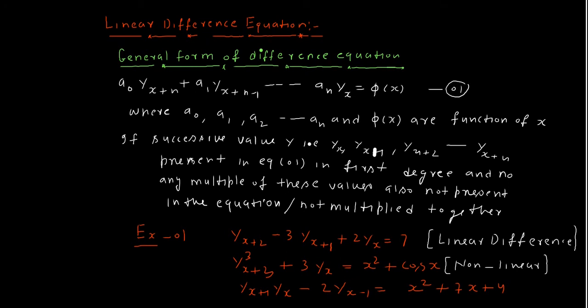In the third equation, each term has degree 1 — y(x), y(x+1), y(x-1) all have degree 1, so the first criterion is satisfied. However, there is a multiple of two terms: y(x) and y(x+1) are multiplied together as two successive differences in the equation. Therefore, this one is non-linear.